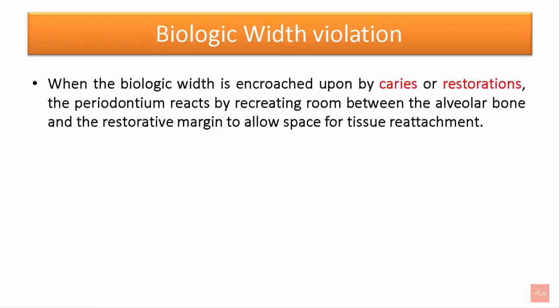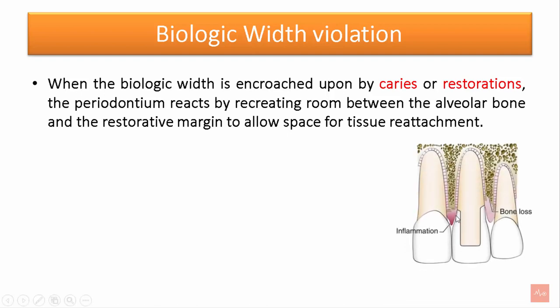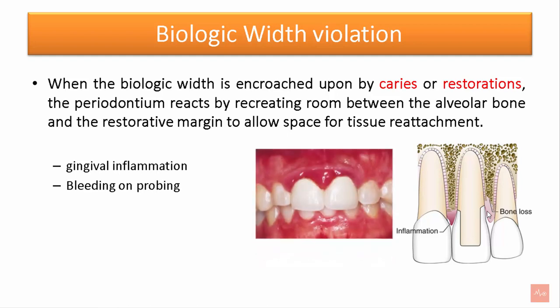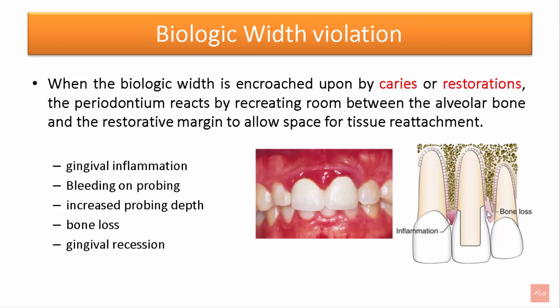When the biological width is encroached upon by caries or restorations, the periodontium reacts by creating room between the alveolar bone and the restorative margin to allow space for tissue attachment. In this image, you can see the margins of the restoration located subgingivally into the biological width, causing its violation. Biological width violation can be seen clinically as gingival inflammation, bleeding on probing, increased probing depth due to bone loss, gingival recession, and at times gingival hyperplasia.